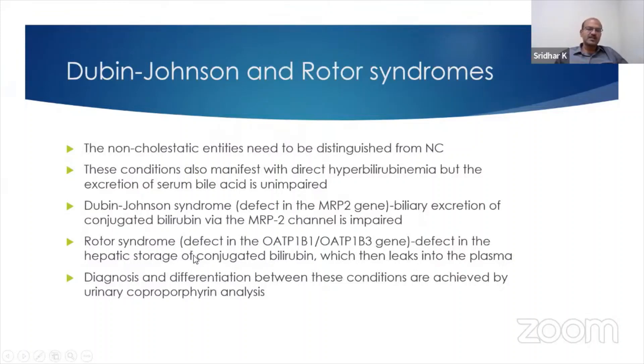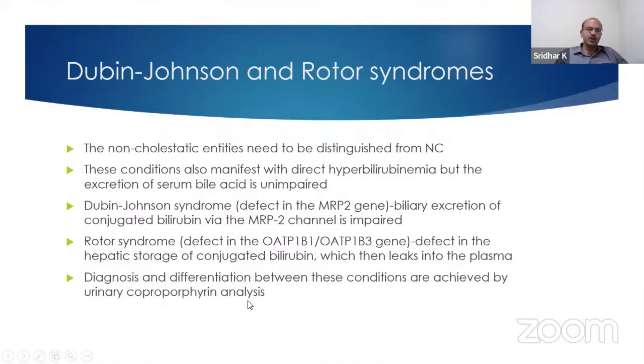So both of these are causes of conjugated bilirubin rise, but that is not cholestasis. The rest of the enzymes — GGT and everything — will be normal. You can differentiate them by the urinary coproporphyrin analysis.